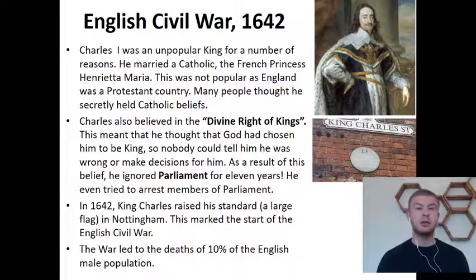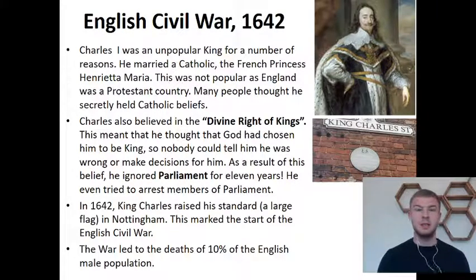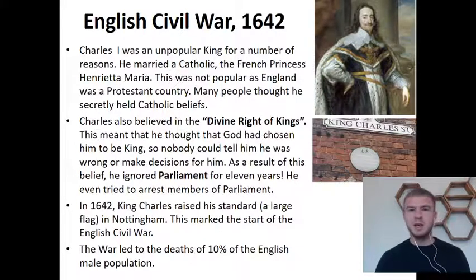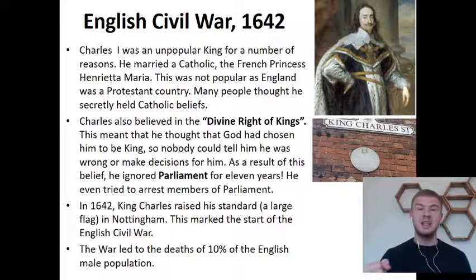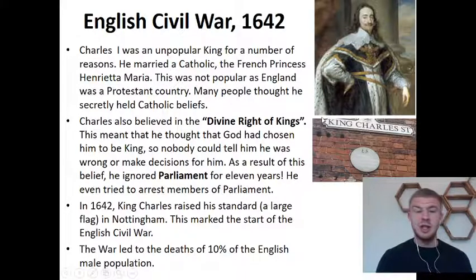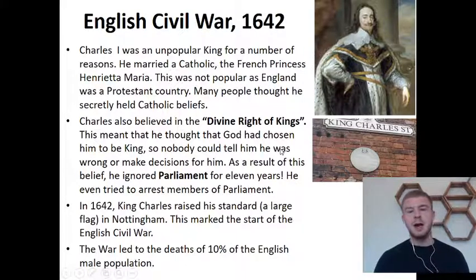Trying to arrest Parliament was the final straw. They felt they'd been ignored for ages — they'd set a rule that Parliament had to be listened to at least once every three years, which is still not very much — and then he tried to arrest them, proving he was a tyrant: someone who makes decisions on their own and doesn't listen to anybody else. To show the war was starting, in 1642 King Charles raised his standard — another name for a large flag — in Nottingham. You can go into town and see a plaque on King Charles Street near Nottingham Castle marking where the Civil War started.